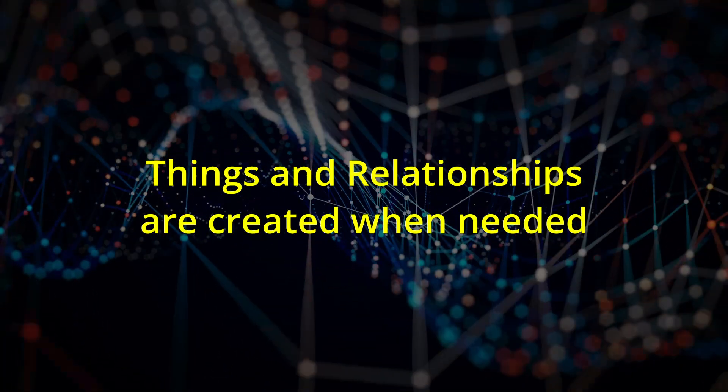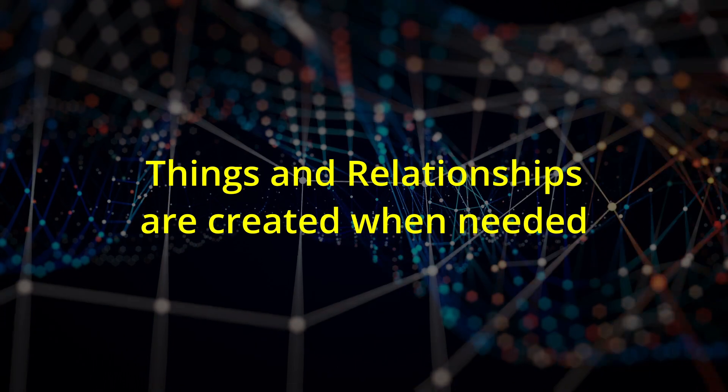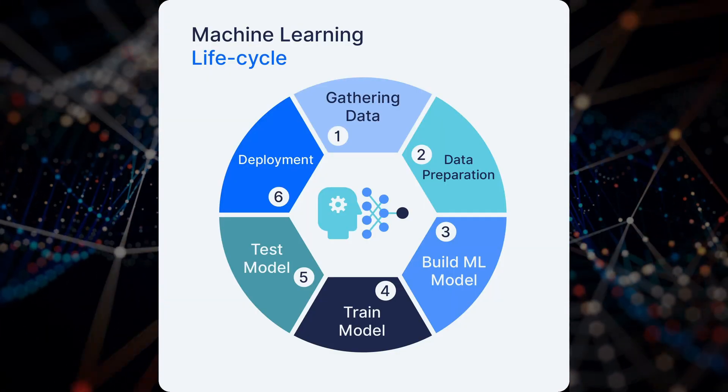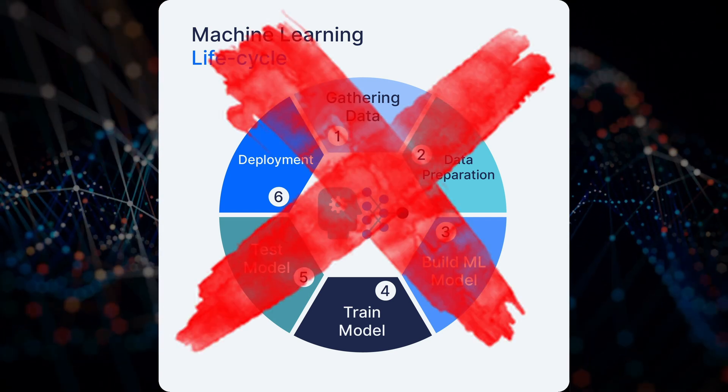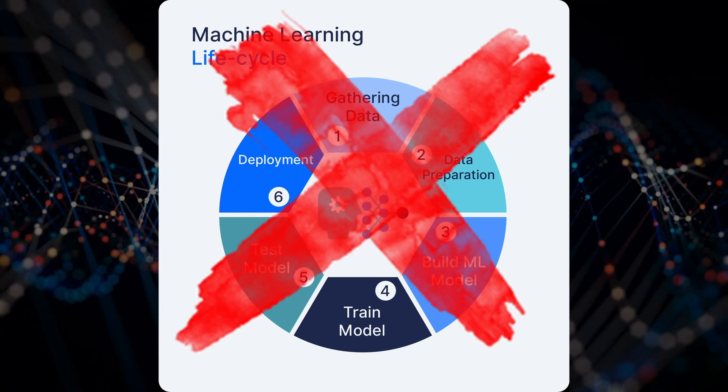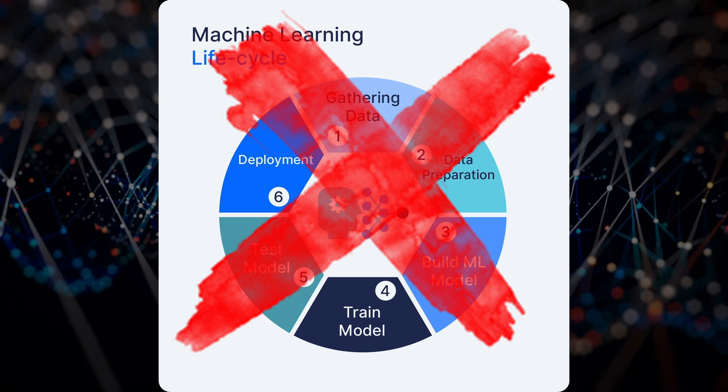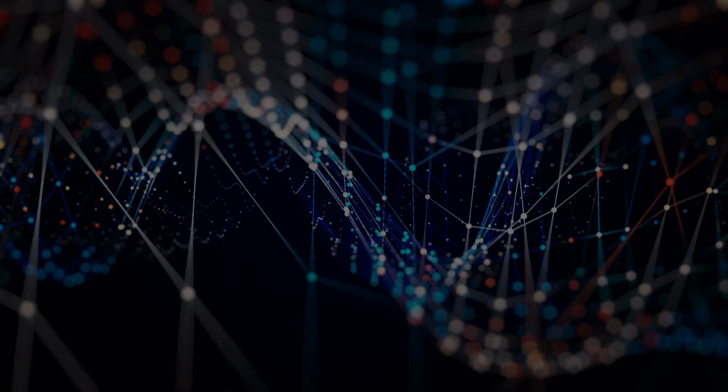The system creates new things and relationships whenever they are needed. This upends the idea of AI having a training phase and deployment phase because the system can learn new information and acquire new skills at any time.